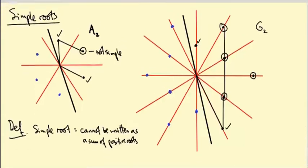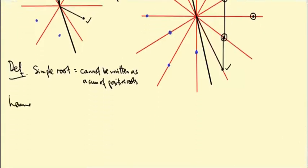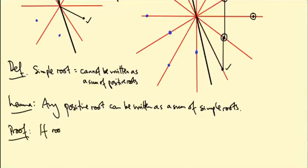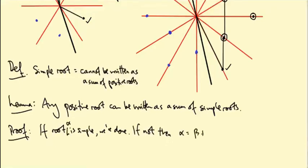We're going to prove some results about simple and non-simple roots. First: any positive root can be written as a sum of simple roots. Proof: if your root is simple, then it's a sum of one simple root, so we're done. If not, then it's a sum of two positive roots. Let's call this root alpha; then alpha equals beta plus gamma for some positive roots beta and gamma.